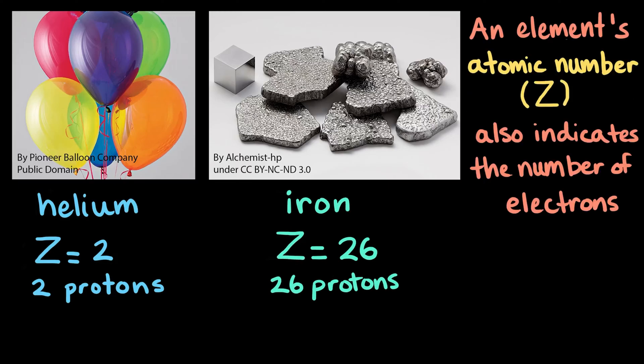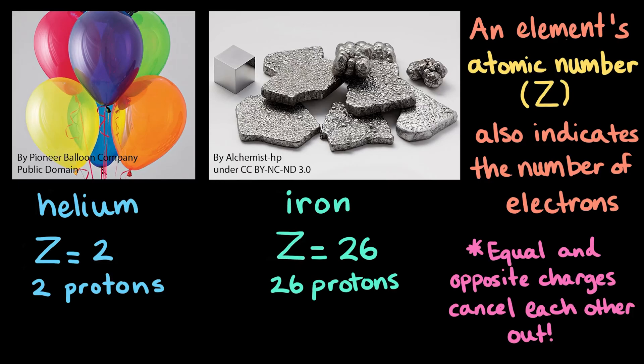An element's atomic number can also tell us the number of electrons in a neutral atom of an element. Remember, equal and opposite charges cancel each other out. So, to be neutral, an atom must have an equal number of protons.